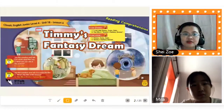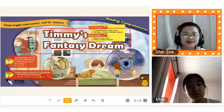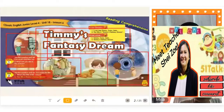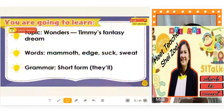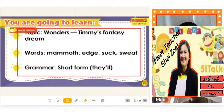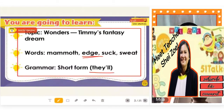Today we will talk about Timmy's fantasy dream. Fantasy dream. You can try to check his dreams. All of these are all fantasy, right? Let's try to read all the things that you're going to learn for today, Mila. Timmy's Fantasy Dream. Our grammar will be short form — they will. Let me hear this word from you again, Mila. Say 'edge.' Edge. Perfect. You got a star for that.